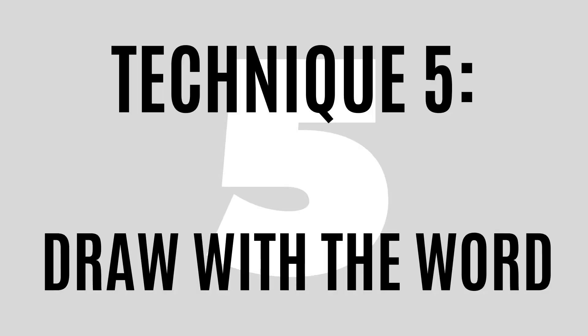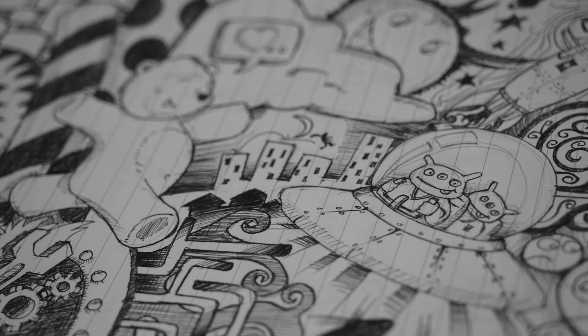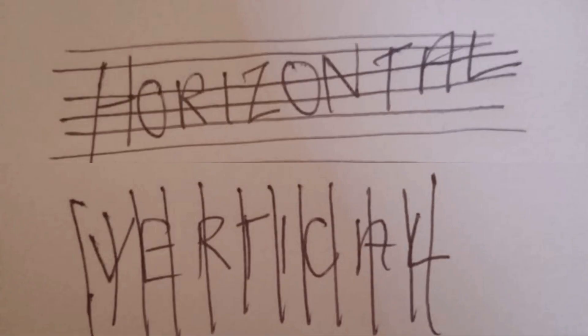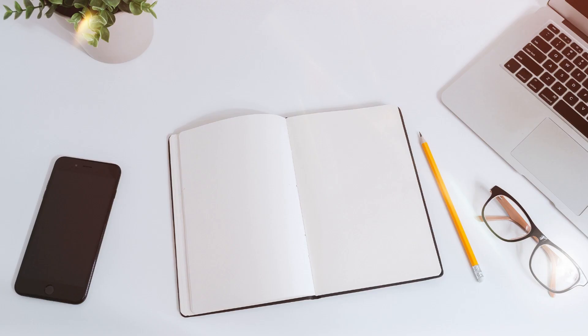Technique 5 – Draw with the first letters. Just doodle some funny images using the meaning of the word and its actual spelling. This serves two purposes: it helps you remember the meaning, and it helps you with the spelling. The images on the screen show you how it can be done — very simple and effective. So making things visual has a lot of learning benefits.